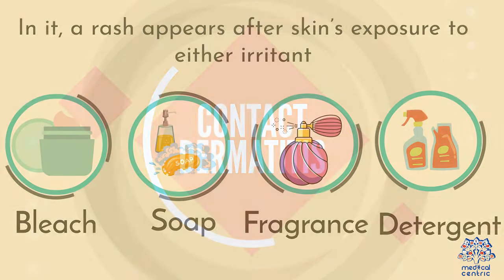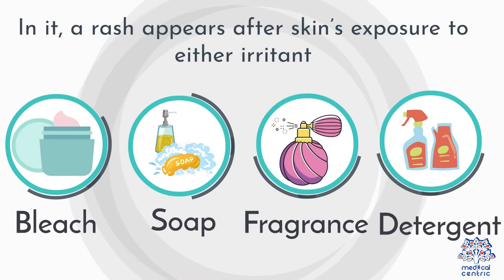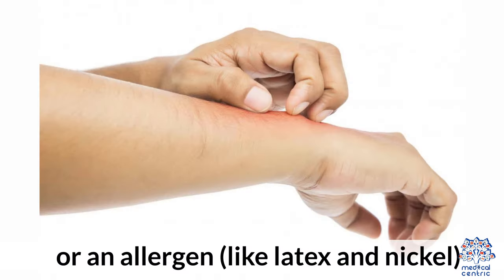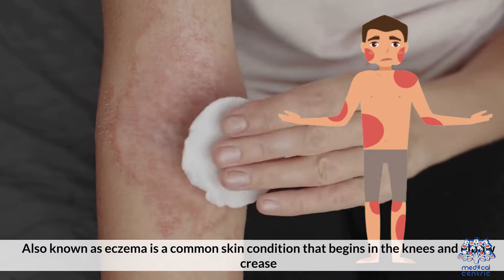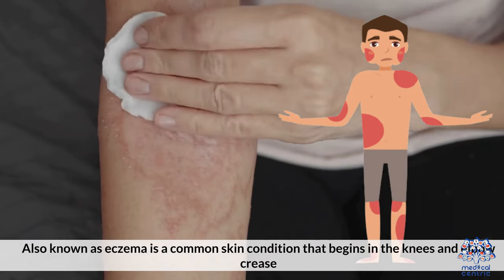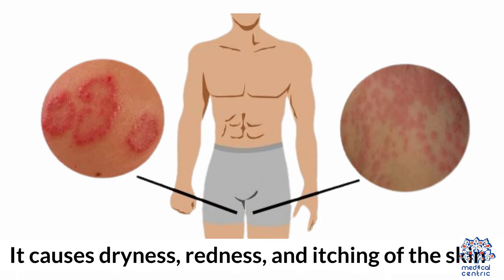4. Contact dermatitis. A rash appears after the skin's exposure to either an irritant, like bleach, soap, fragrance, and detergent, or an allergen, like latex and nickel. 5. Atopic dermatitis, also known as eczema, is a common skin condition that begins in the knees and elbow crease and may spread to other areas of the body, including the groins. It causes dryness, redness, and itching of the skin.